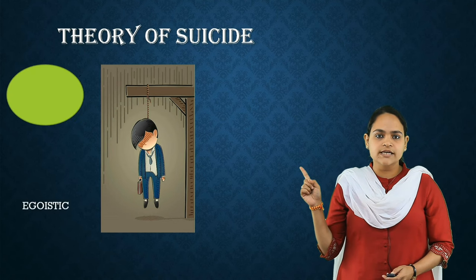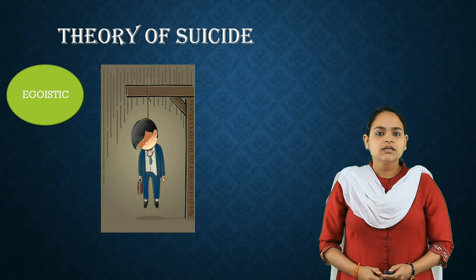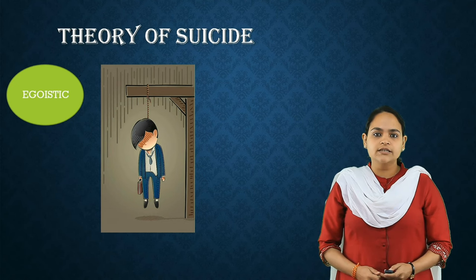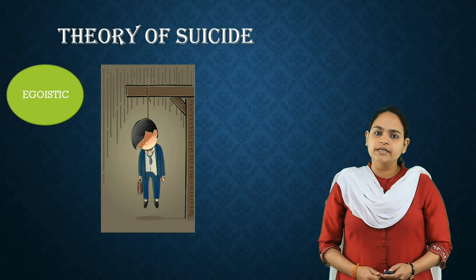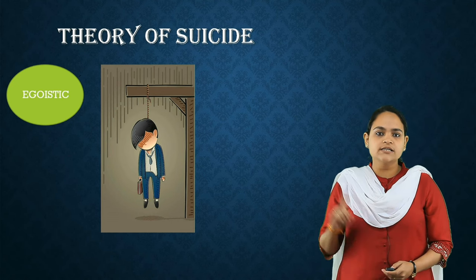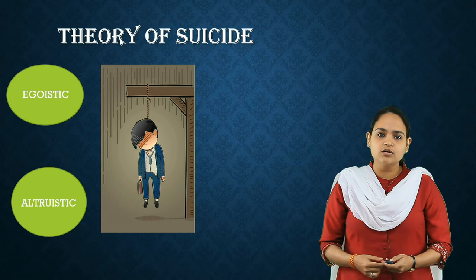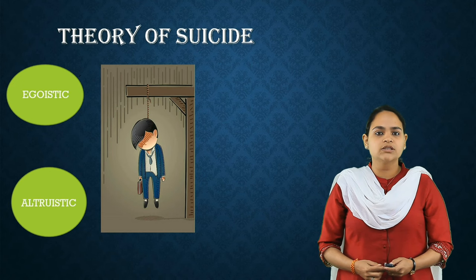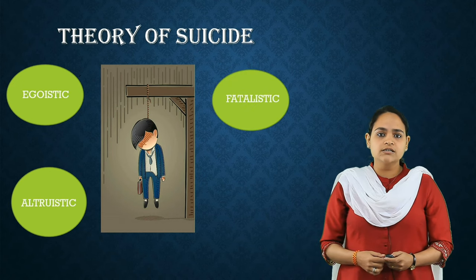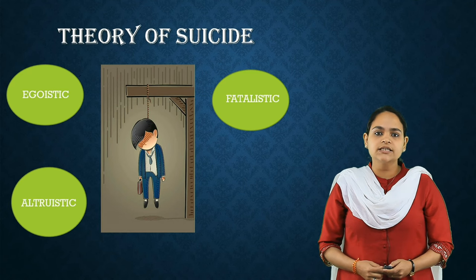According to Durkheim, egoistic suicide takes place as a result of complete detachment from society — the individual feels completely left out. For example, when a juvenile delinquent returns to society but feels left out due to lack of acceptance, they may end up committing suicide. The opposite, altruistic suicide, occurs when the individual due to excessive integration may end up killing oneself for the well-being of society. The classic example is military men who sacrifice their lives for the well-being of society. Fatalistic suicide occurs under conditions of extreme regulation and restrictions, where a person may prefer death over surviving in oppressive conditions — such suicides generally take place among prisoners.